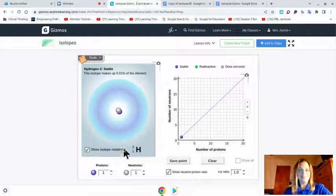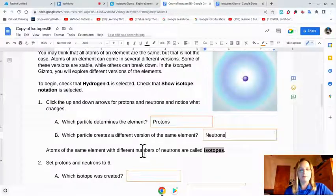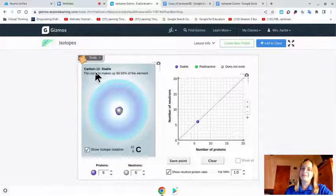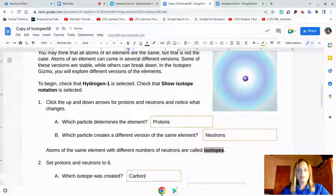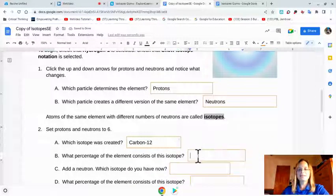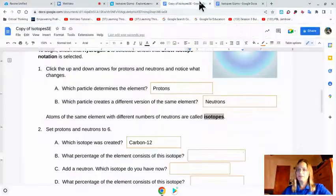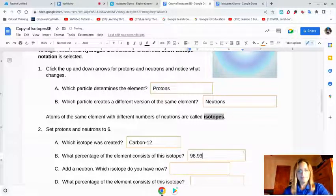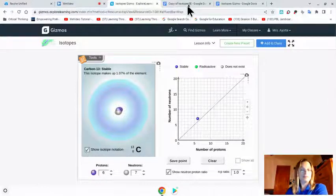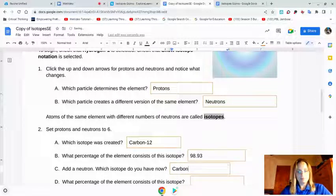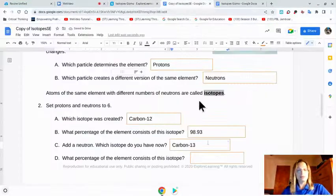So set protons and neutrons to 6. What did we make? We made carbon-12. Let me show you that because it says which one was created. It's right up here. Carbon-12. What percentage of the element consists of this isotope? Let's find out. This isotope makes up 98.93%. Look at that. Almost all of it. Add a neutron. Now we have carbon-13. Which percentage consists of this isotope? 1.07%. Pretty cool.